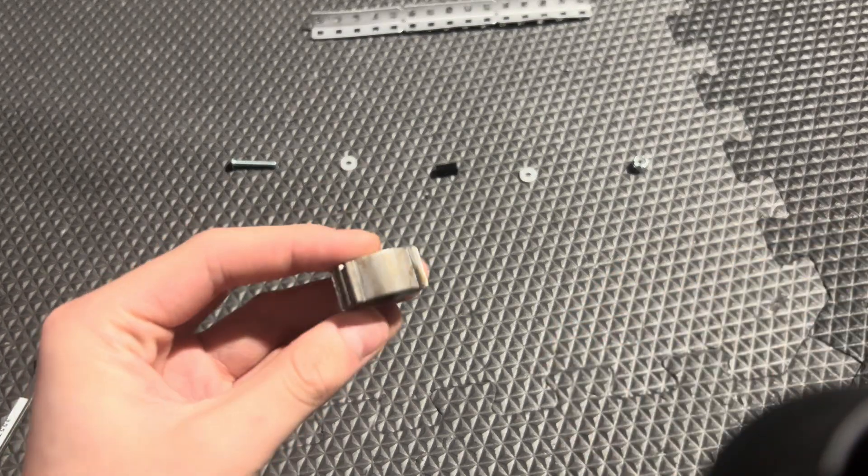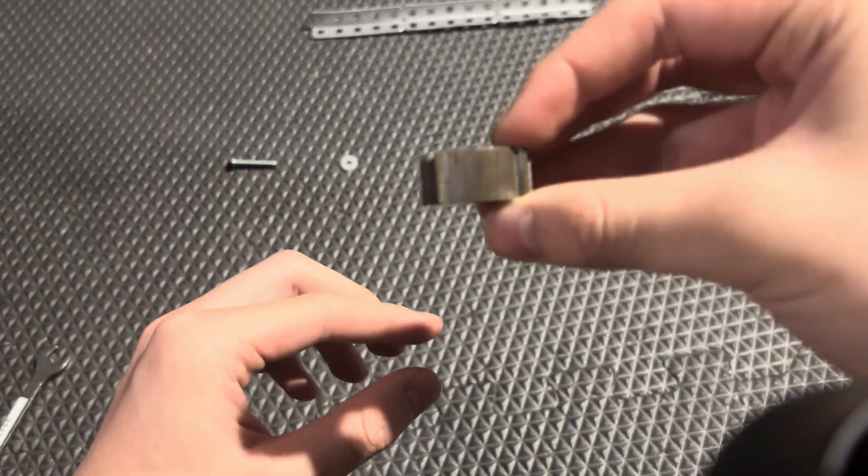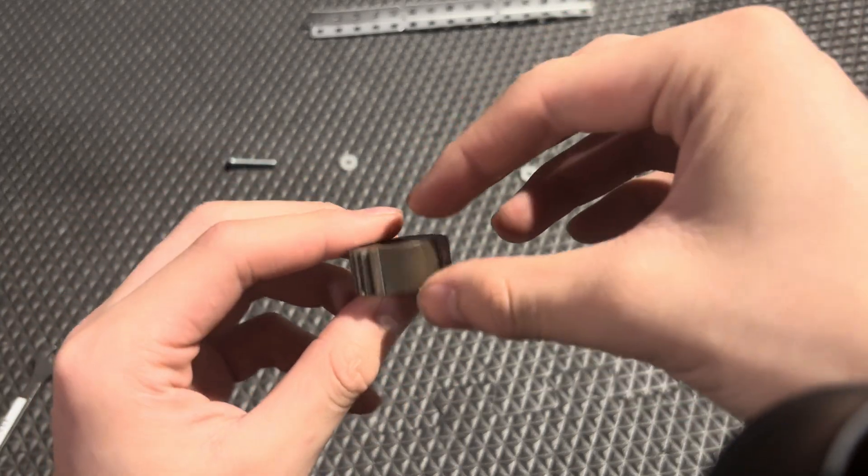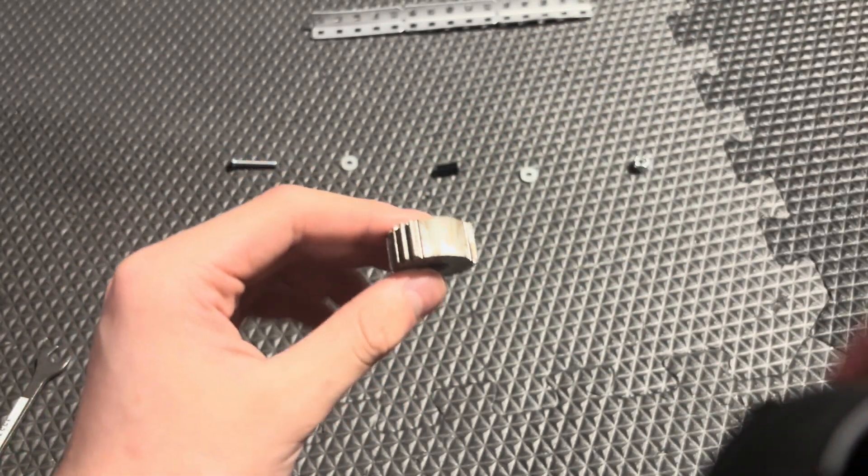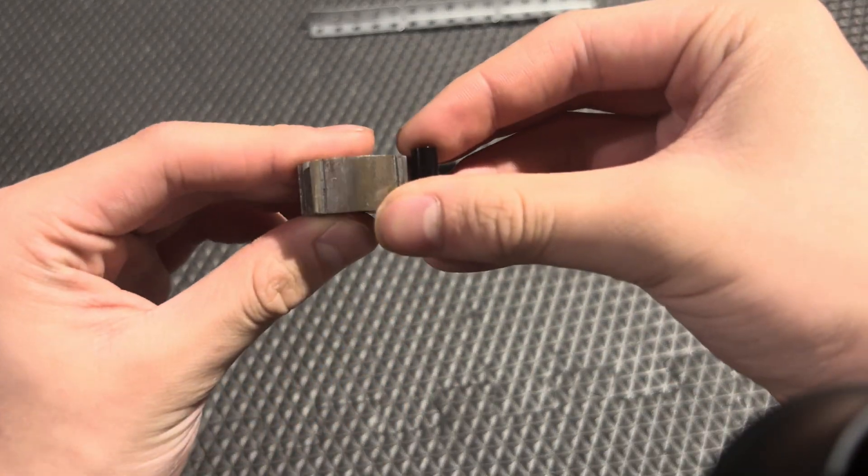To start off, you want to measure the width of your gear, or whatever you're trying to attach. This one is ½-inch thick, and my spacer is just slightly longer than that.